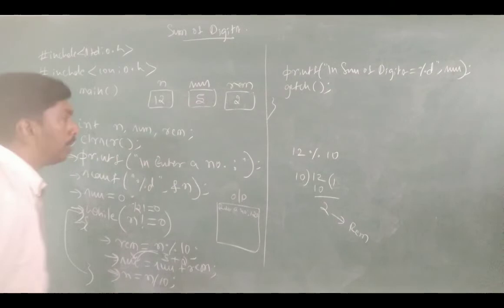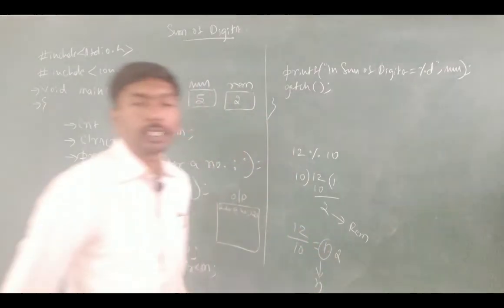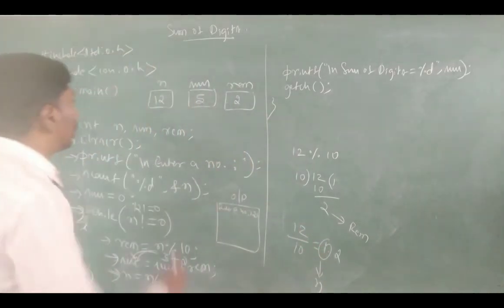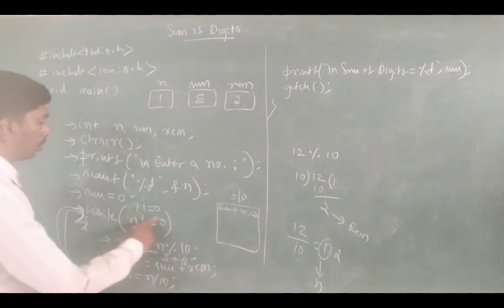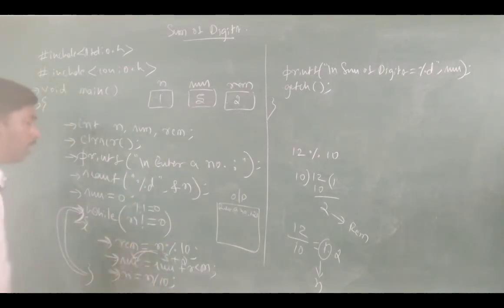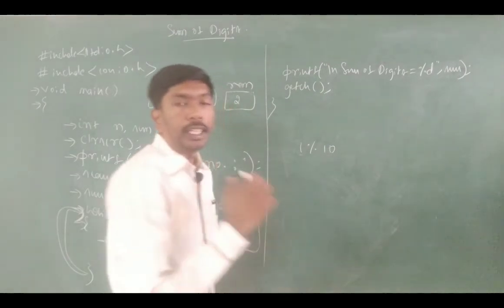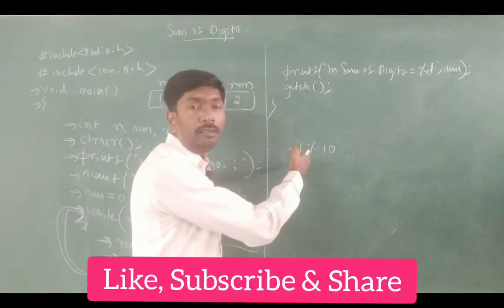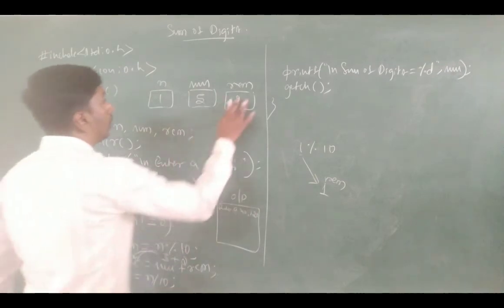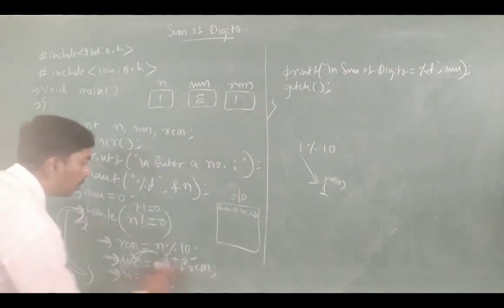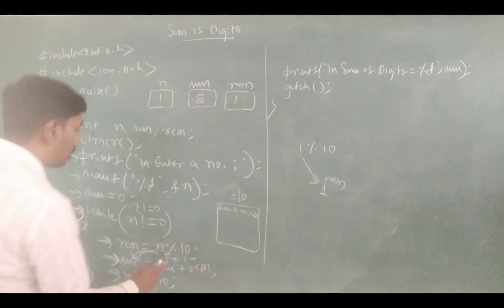Next, n is equal to n divided by 10: 12 divided by 10 is 1.2, so only the integer portion 1 is stored in n. Again the while condition: n is not equal to 0, 1 is not equal to 0, condition true. Remainder is 1 mod 10, which gives remainder 1. Sum is equal to sum plus rem: 5 plus 1 equals 6, stored in sum.